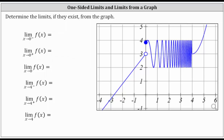We're asked to determine the limits if they exist from the graph. We have the limit of f of x as x approaches zero from the left or the negative side for the first one-sided limit. Let's begin by sketching x equals zero, which is the y-axis.